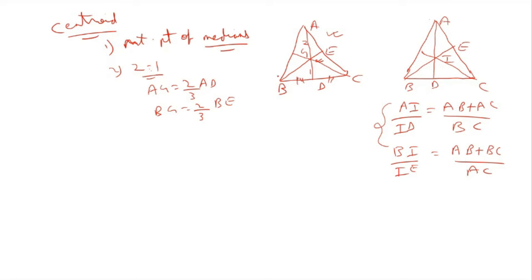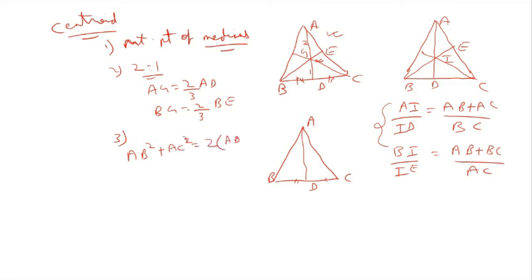For medians, the important length formula is the Apollonius theorem: AB² + AC² = 2(AD² + BD²). Since D is the midpoint of BC, BD = BC/2, so BD² = BC²/4. This allows you to find the length of any median if the three sides of the triangle are known.